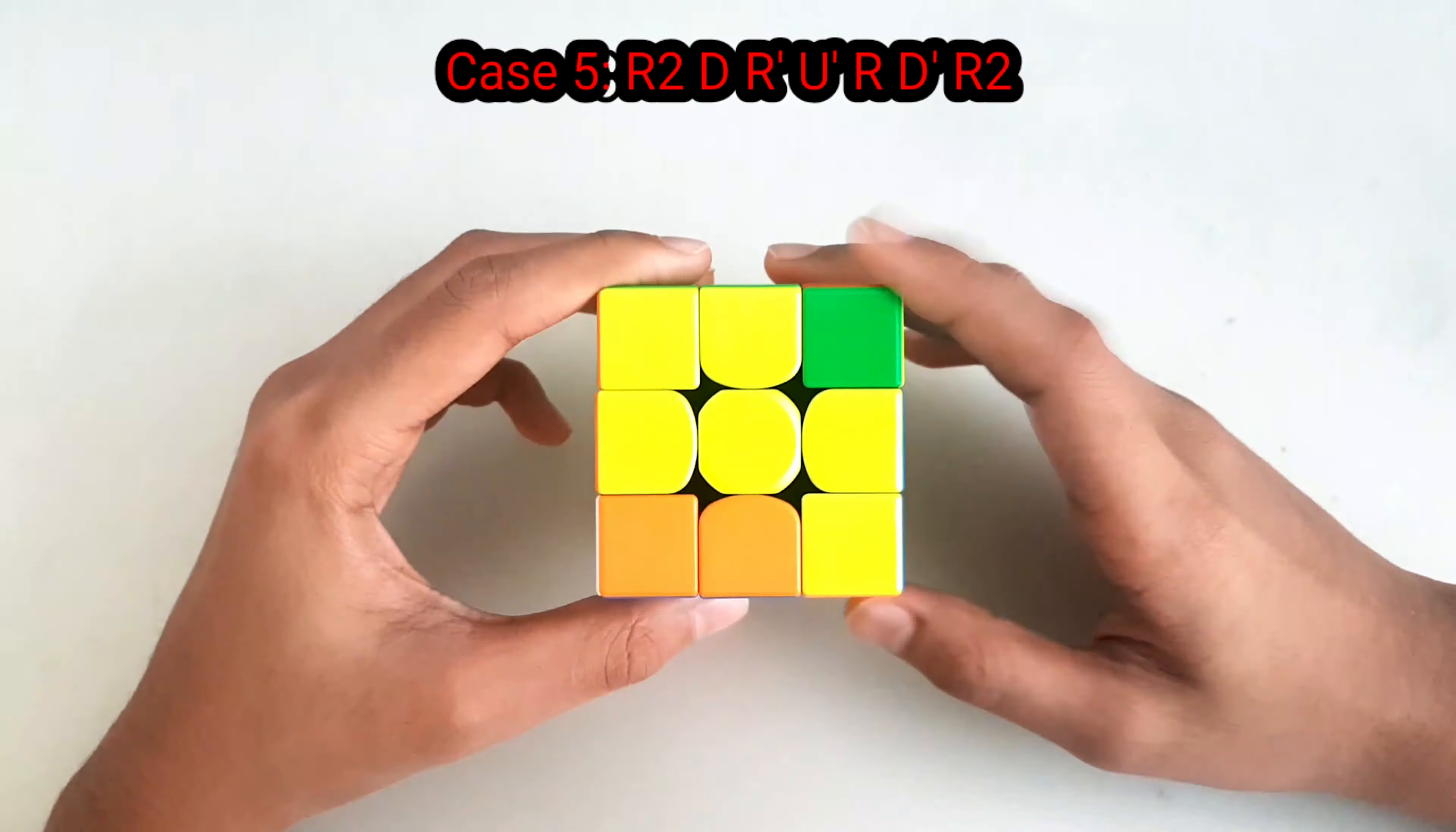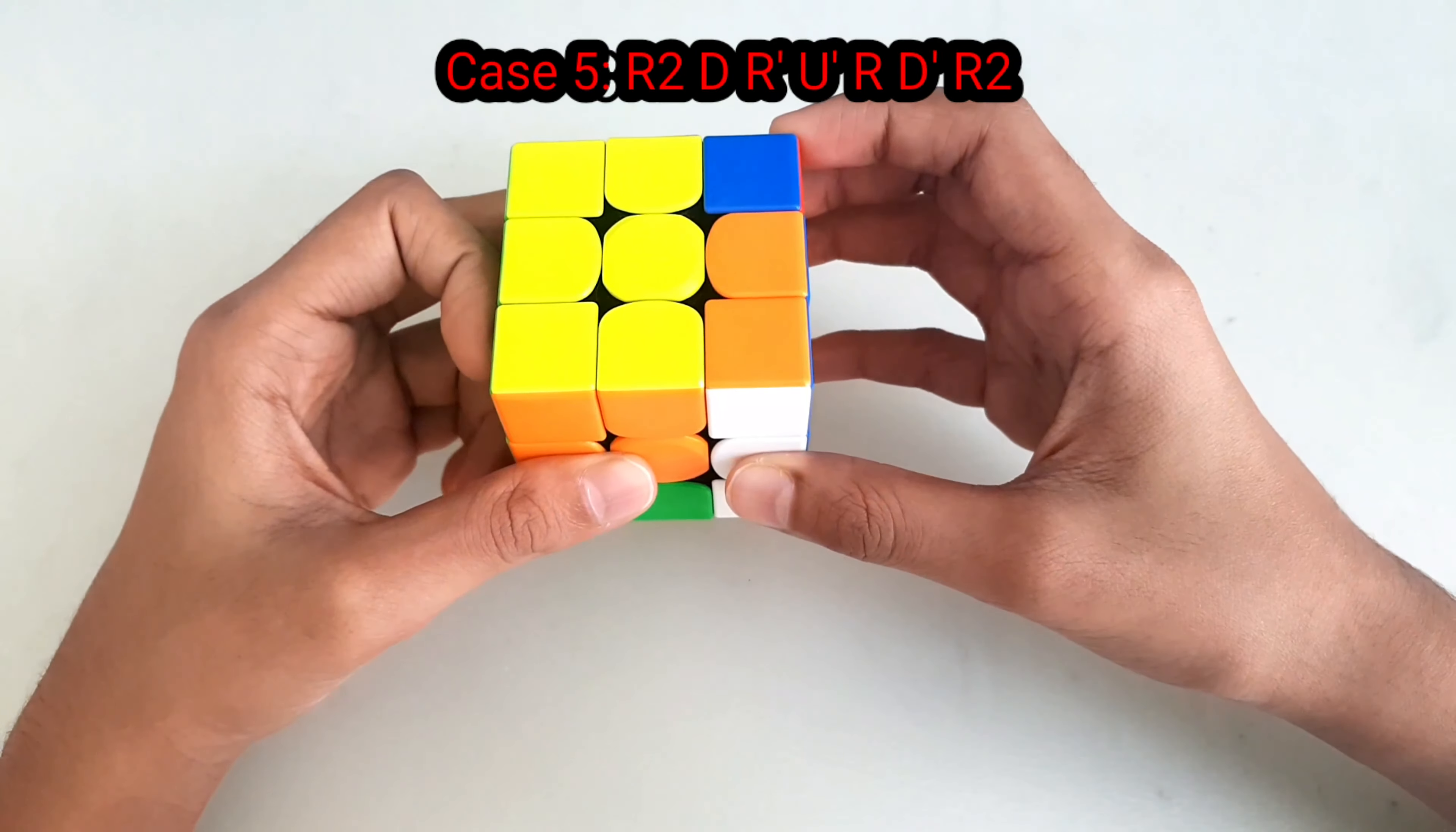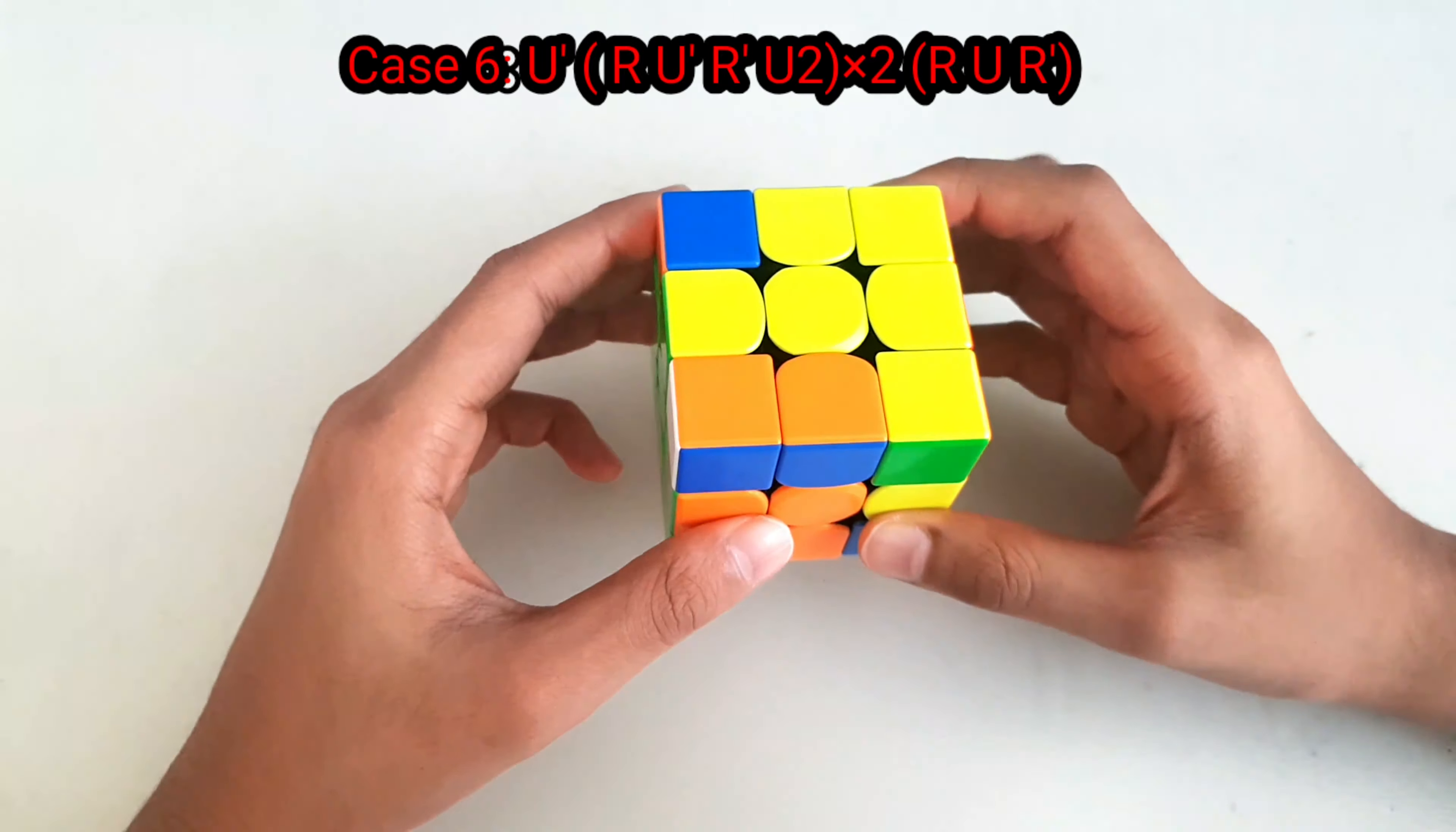The next case is when you have the yellow corner facing the back in the top left corner. The algorithm goes like this...